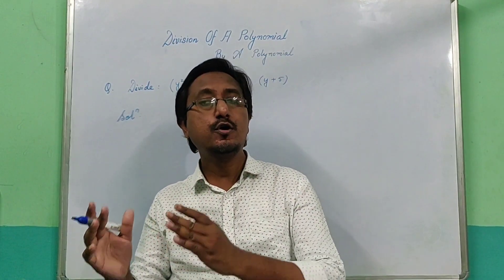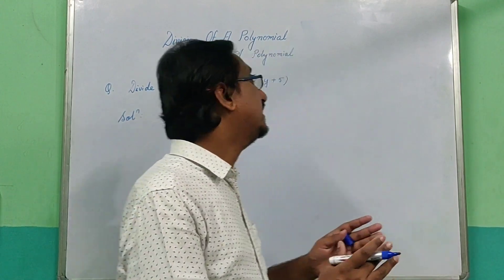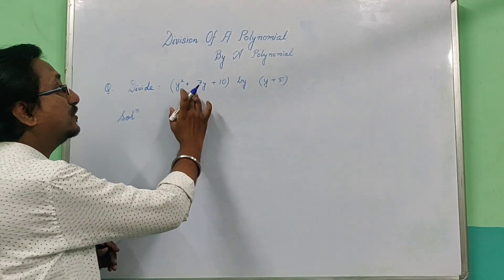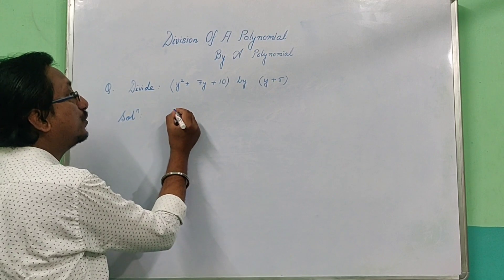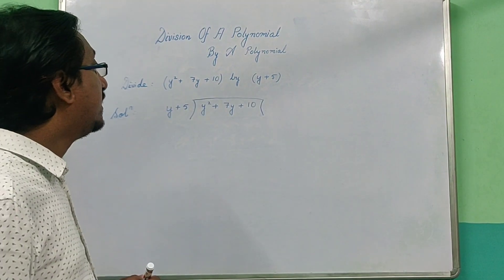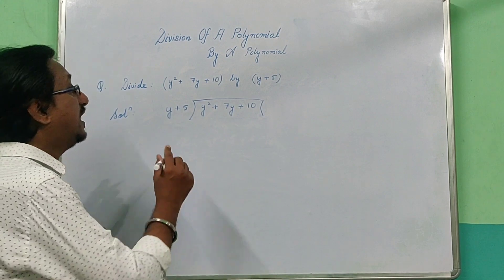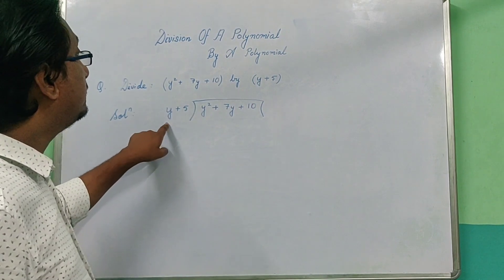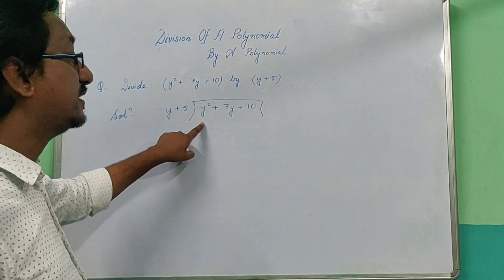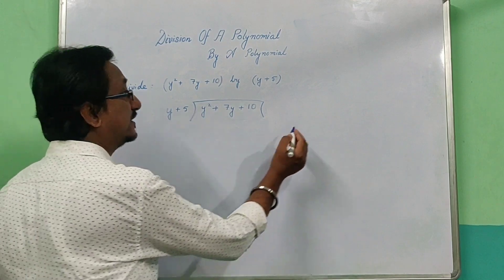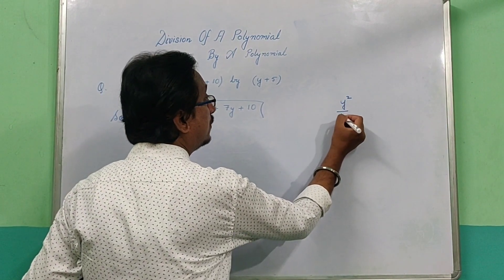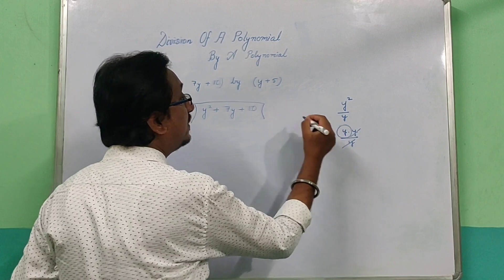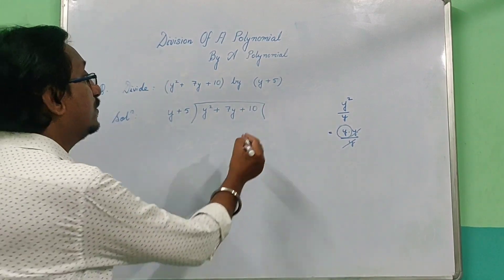Now we divide a polynomial by a polynomial. First we have a trinomial and a binomial, which is a polynomial. So we have a trinomial divided by a binomial. Now we use the long division method. We compare the y² term and the y term and then divide.